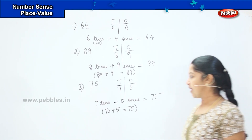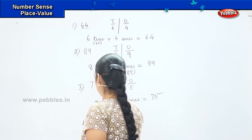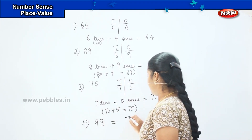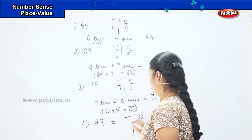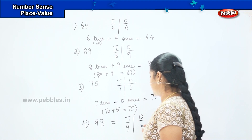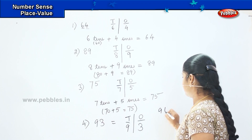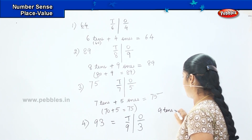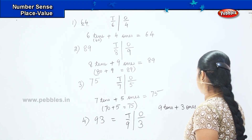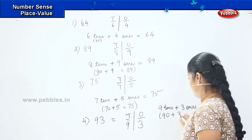Shall we do one more? How will you write ninety-three? The first step is T and O. Nine tens and three ones. So nine tens plus three ones equals ninety-three, where nine tens denotes ninety and three ones denotes three.